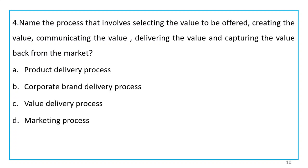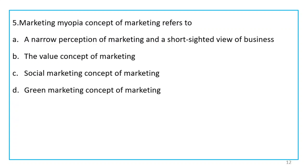The options for the fourth question are: task of marketing, concept of marketing, product delivery process, corporate brand delivery process, and value delivery process. Fifth question options: marketing myopia concept of marketing refers to a narrow perception of marketing and short-sighted view of business; the value concept of marketing; social marketing concept; green marketing concept.